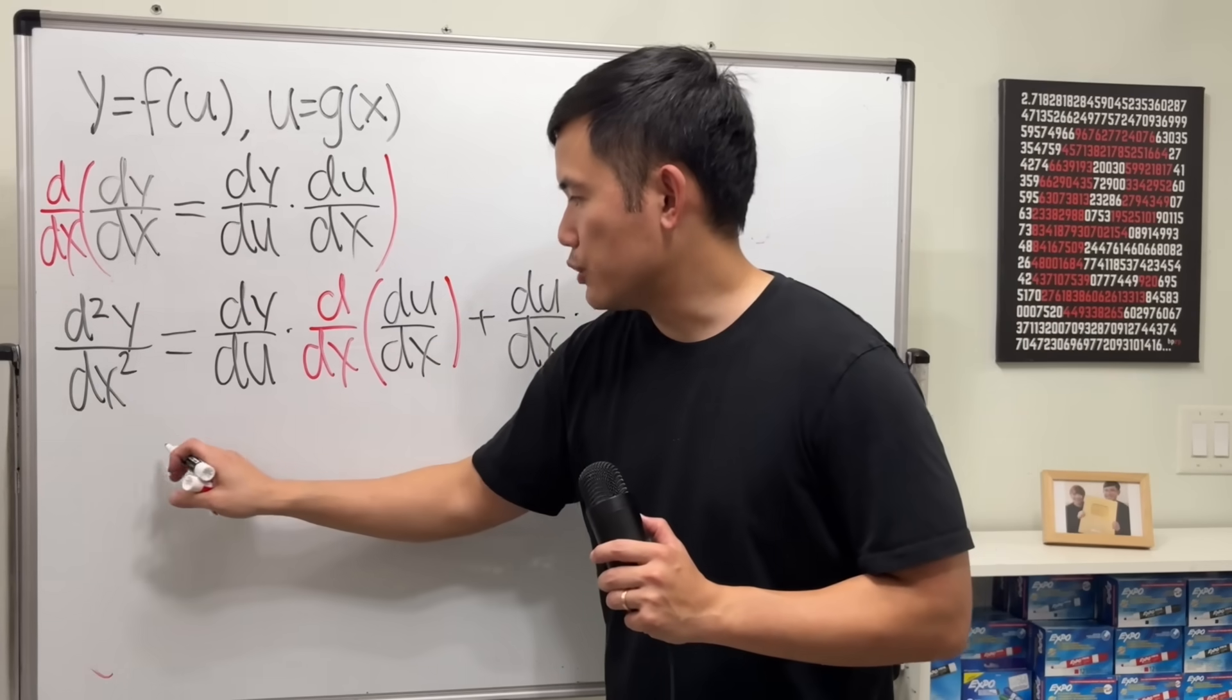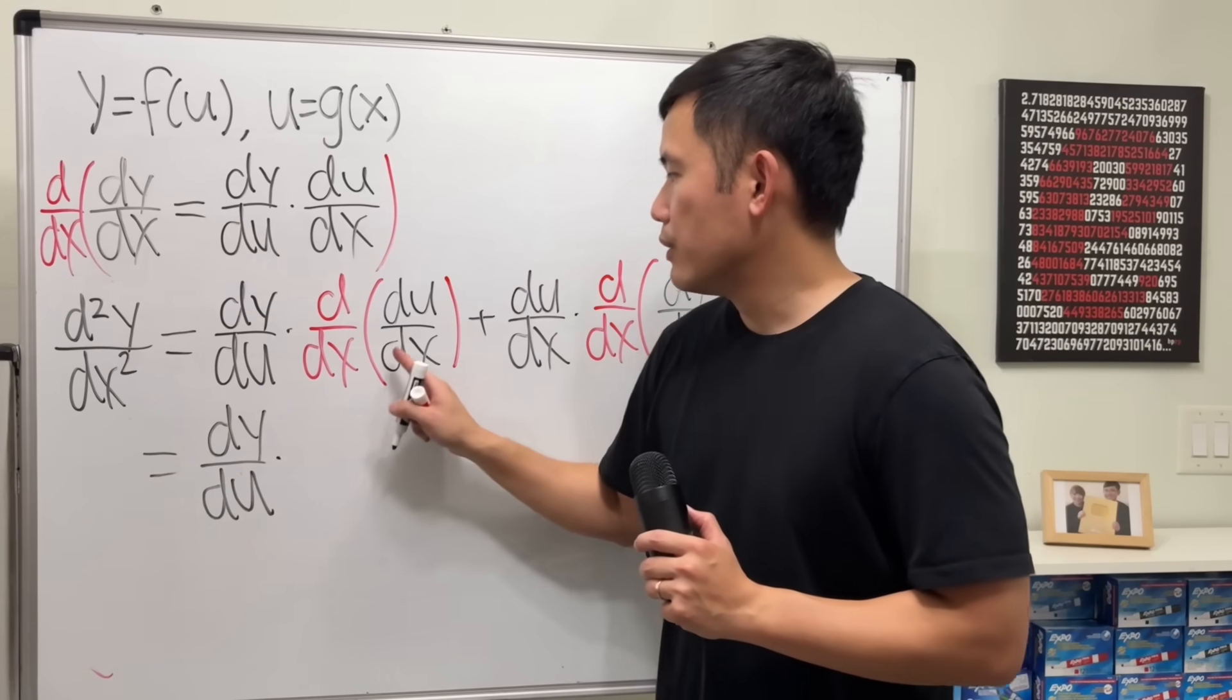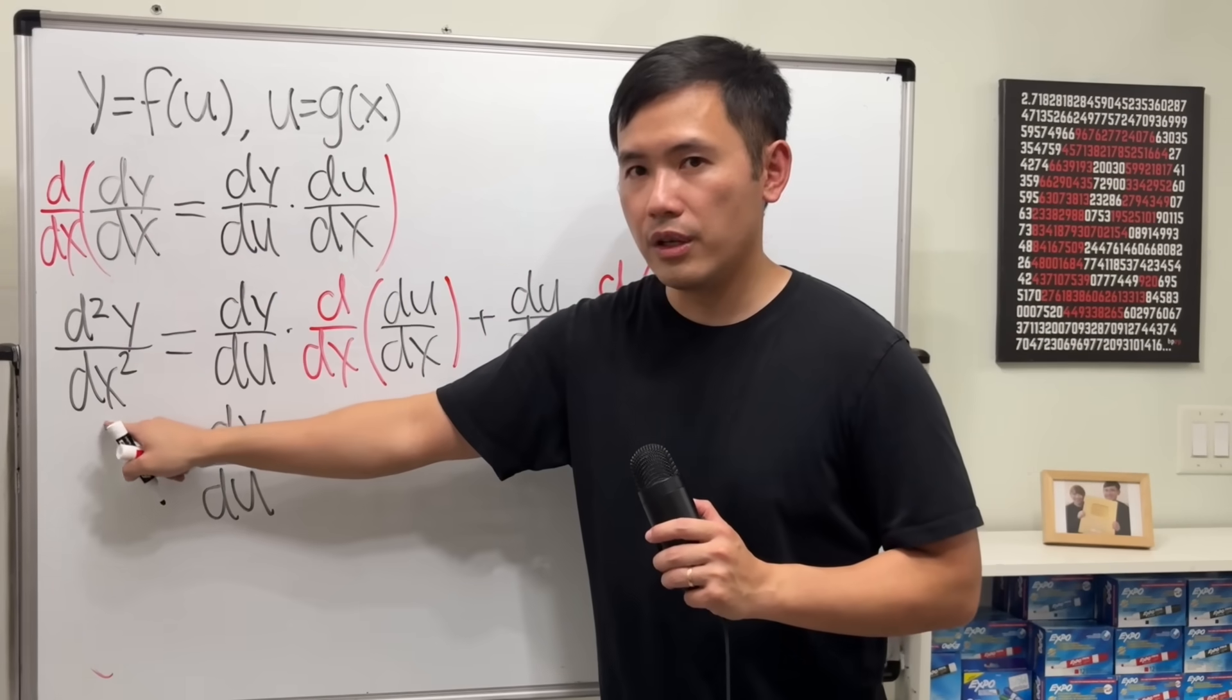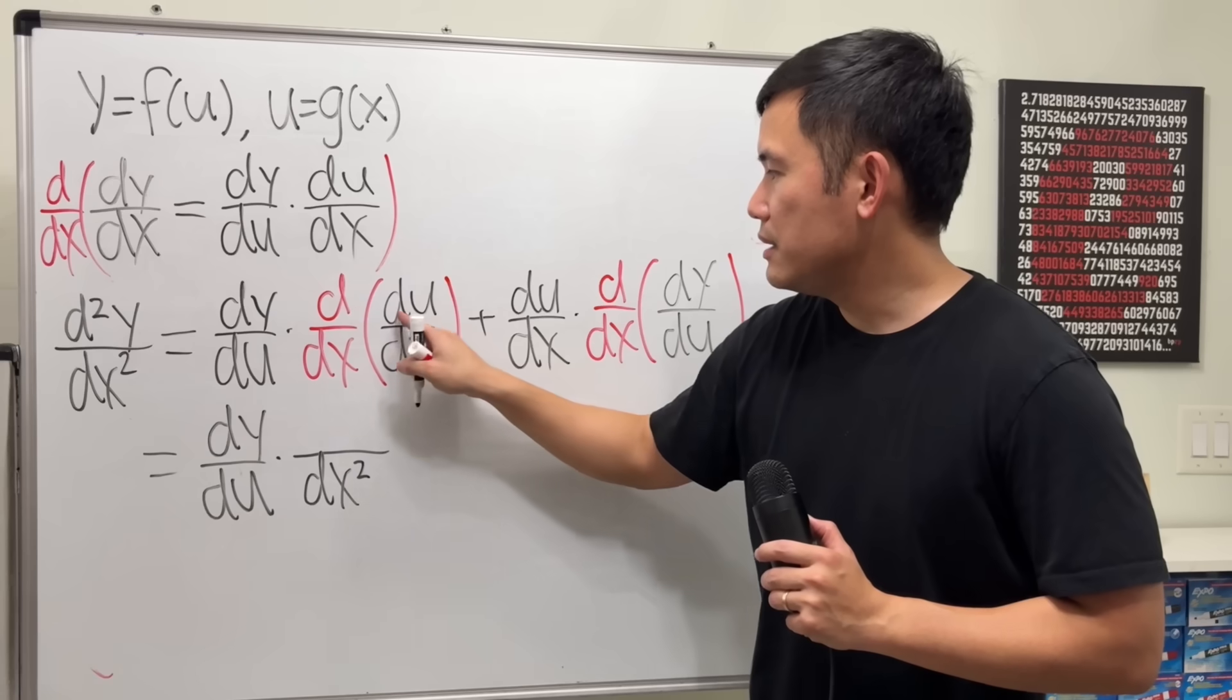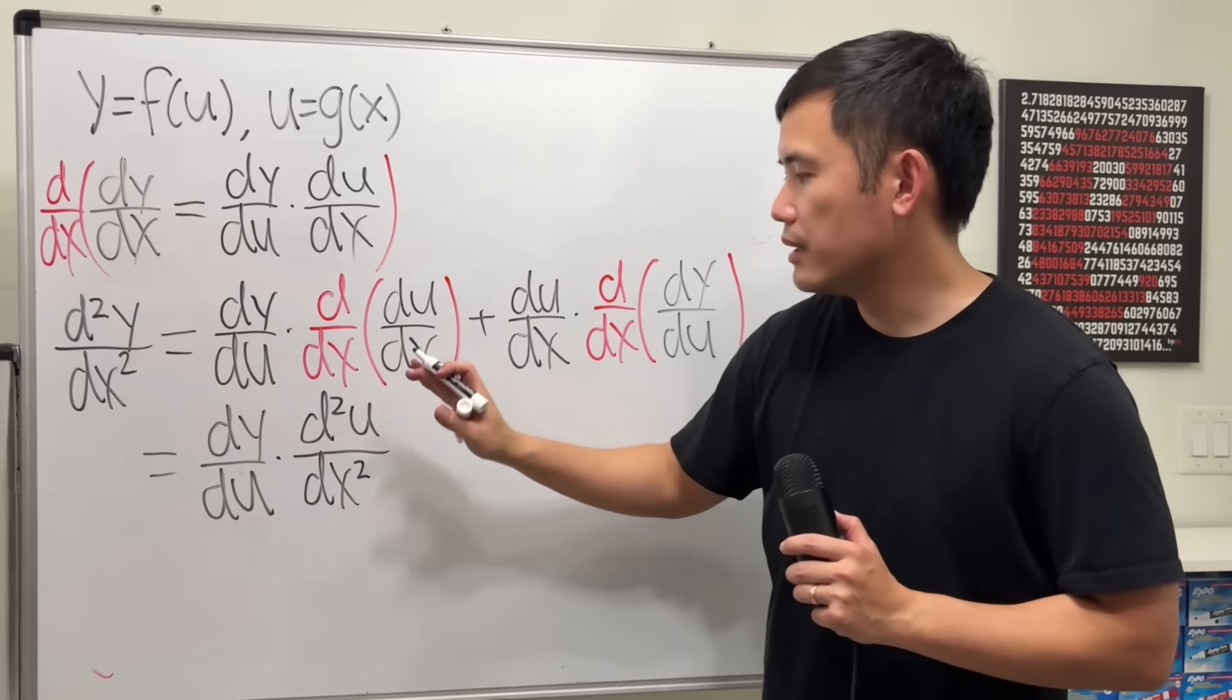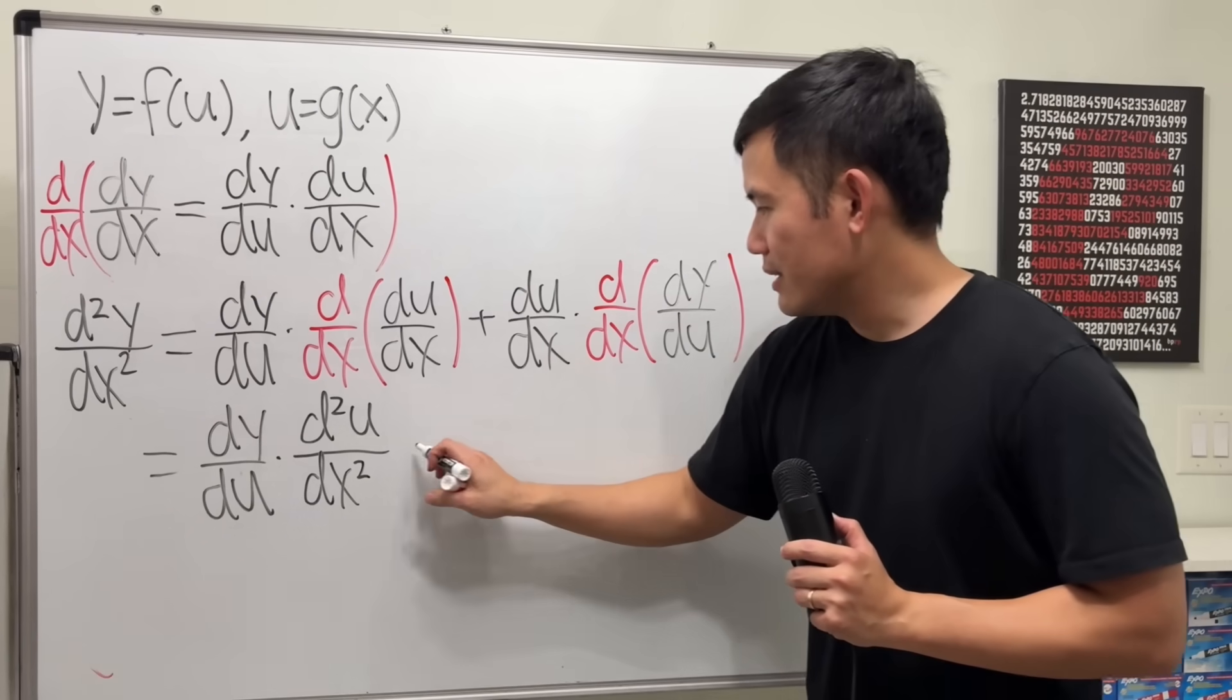For this, it's just that. dy du. For this, dx dx. So that's the same situation as what I explained earlier. We have dx2 on the bottom. d du, like that, right? So we can write it as d2u. So, so far, so good. This, just keep it.